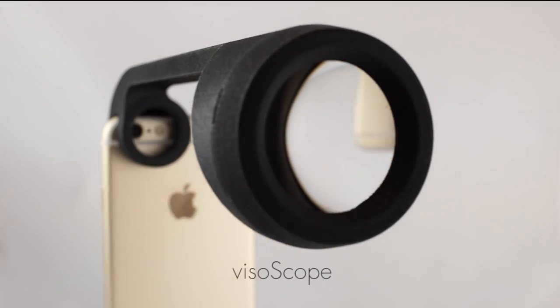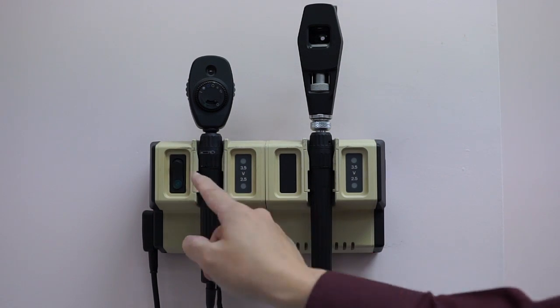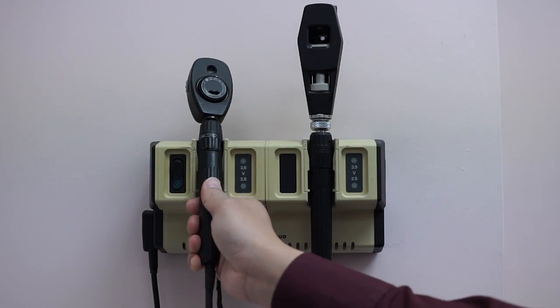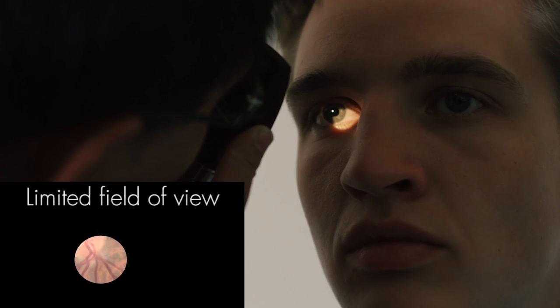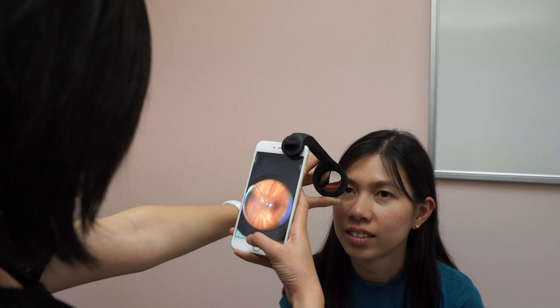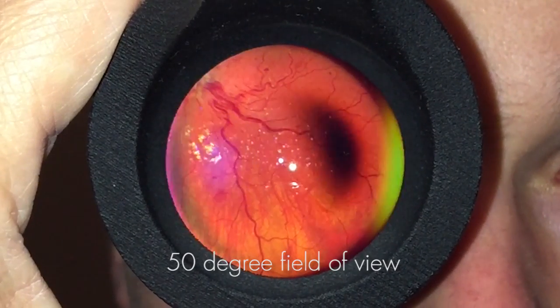The Visoscope revolutionizes the conventional ophthalmoscope. The problem with direct ophthalmoscopes has always been their very limited 20 degree field of view. The Visoscope displays the retina with an unprecedented 50 degree field of view and all in a lightweight portable device.